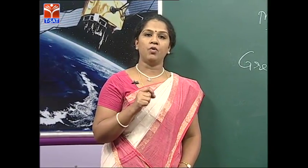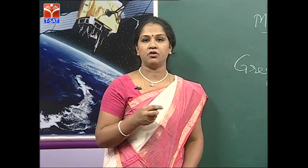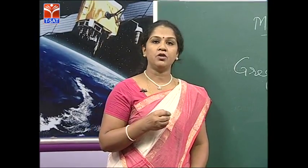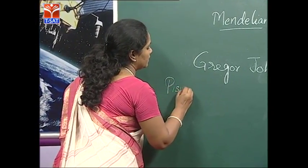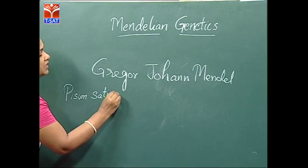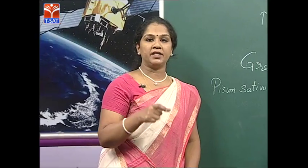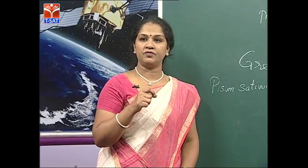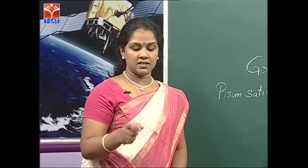Until Gregor Johann Mendel, whom we call the father of genetics, systematically organized experiments for plant hybridization techniques. He was an Austrian monk working at the Augustinian monastery in Austria, working on a pea plant — that is garden pea, Pisum sativum. He was instrumental in determining the laws which laid the foundation for classical genetics and the mechanism of inheritance.